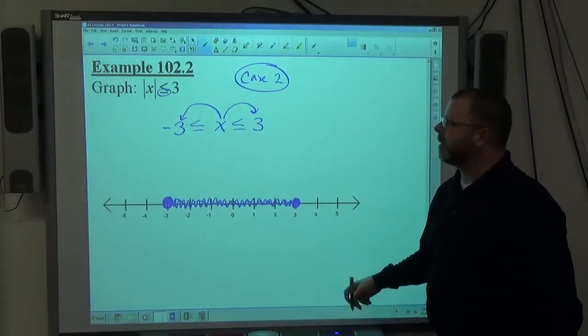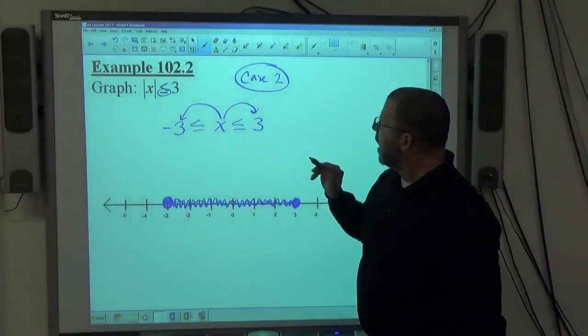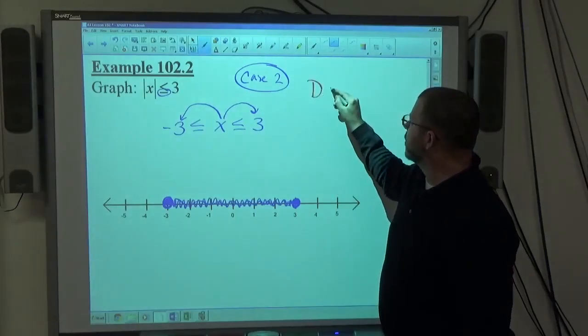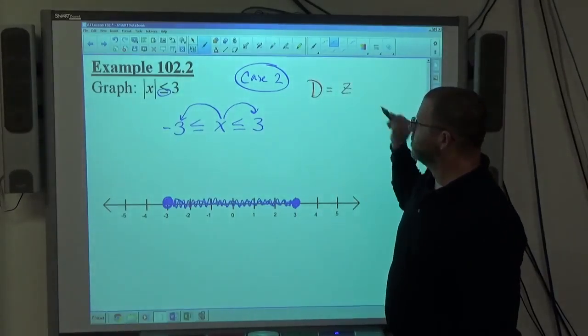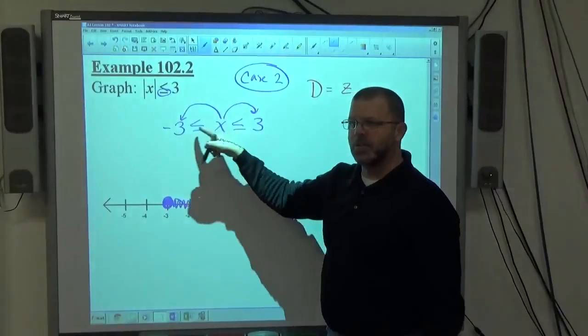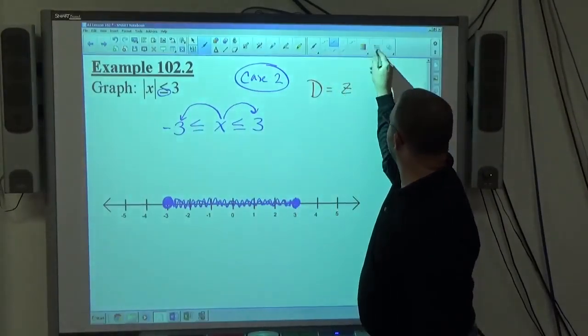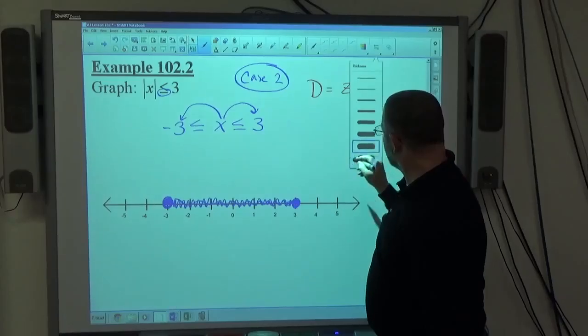One thing, I'm not sure they're going to do this yet, but they might, because the book does that sometimes. They might throw a domain at you. Suppose they say domain is a set of integers, and we have the same exact expression. If I was trying to graph that, this is what it would look like.